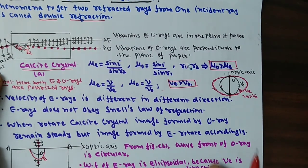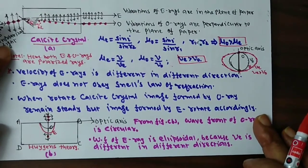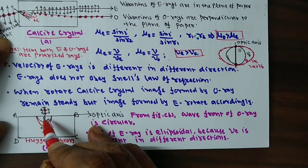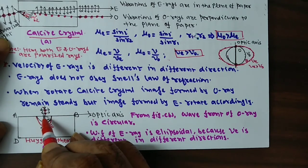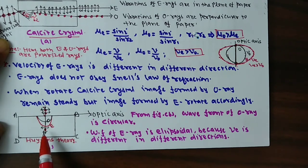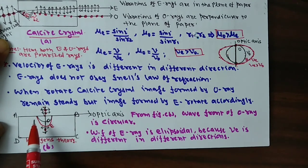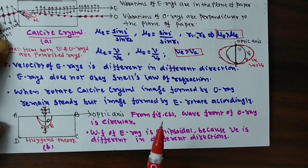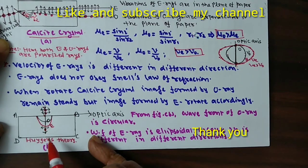Now, you can draw the wavefront according to Huygens' principle. According to Huygens' principle, when a ray of light is incident on a doubly refracting material, this will produce a point on the surface that behaves as a secondary source. This secondary source produces a wavefront for the ordinary ray and a wavefront for the extraordinary ray. The vibration of the electric field vector for the extraordinary ray is parallel to the plane of paper, and the vibration of the ordinary ray is perpendicular to the plane of paper. The wavefront of the extraordinary ray is ellipsoidal, and the wavefront of the ordinary ray is circular.